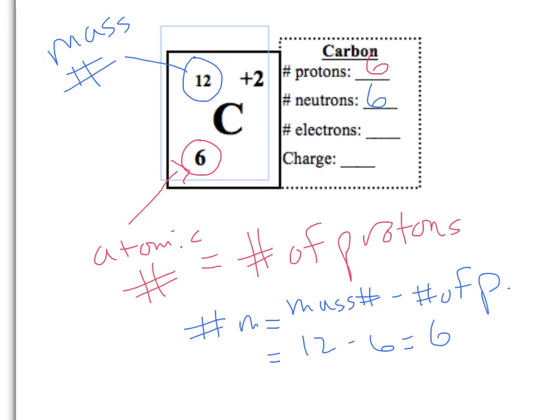For the number of electrons, we have to take a look at the charge of the atom, which is located on the upper right. If there is zero charge, then the number of protons equals the number of electrons.